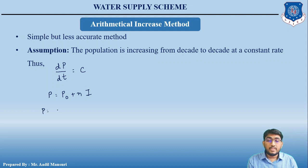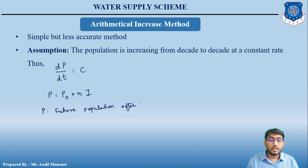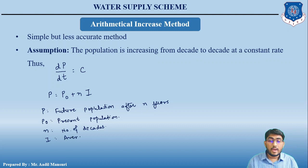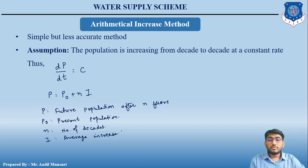In the formula P = P0 + N × I: P is the future population after N years; P0 is the present population; N is the number of decades; and I is the average increase. You will get better clarity when we solve the numerical.